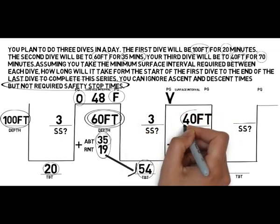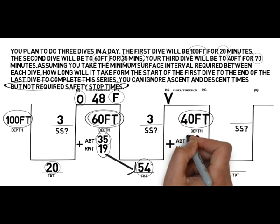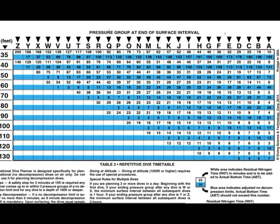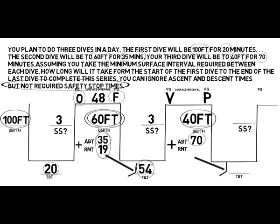Looking across to the right we've got two blanks then a depth, so we use that depth — 40 feet — and our planned actual bottom time of 70 minutes to work out what pressure group we need to be in at the beginning of that dive. Rounding up to 71 minutes, we find we need to be in pressure group P. We also quickly note the residual nitrogen time to save time: 69 minutes of residual nitrogen time.